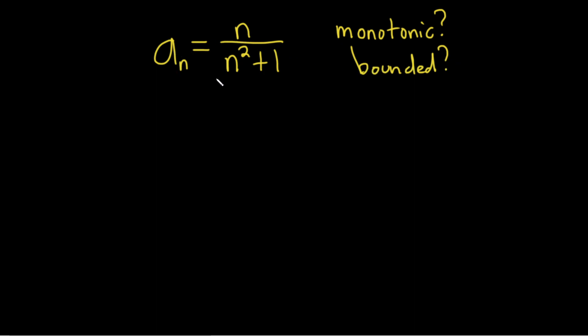Hello! In this problem we have a sequence, n over n squared plus 1, and we're asked two questions. The first one is, is it monotonic? That means, is it decreasing or increasing? And the second is, is it bounded?